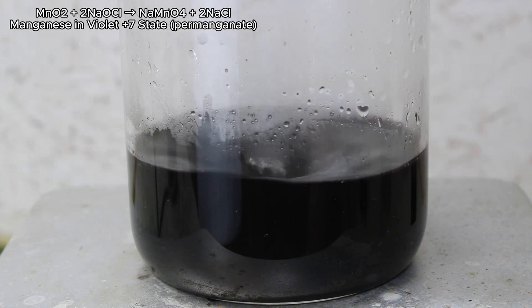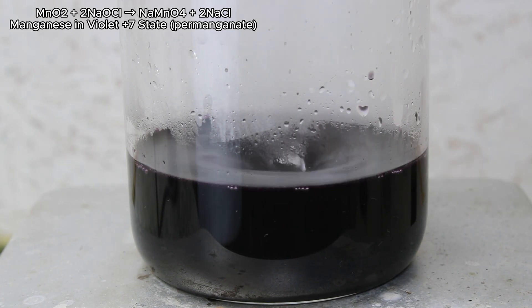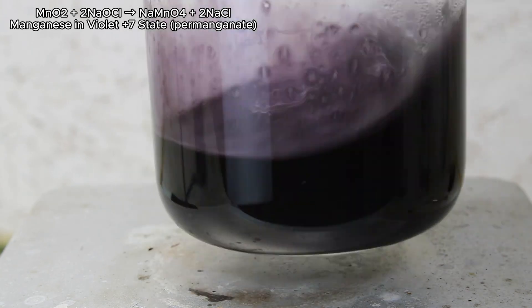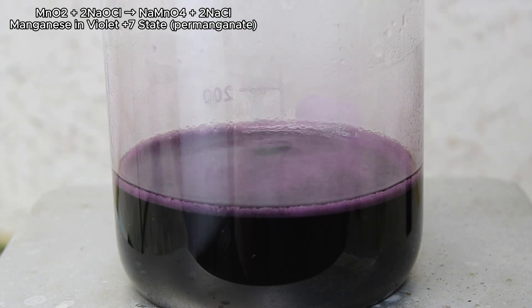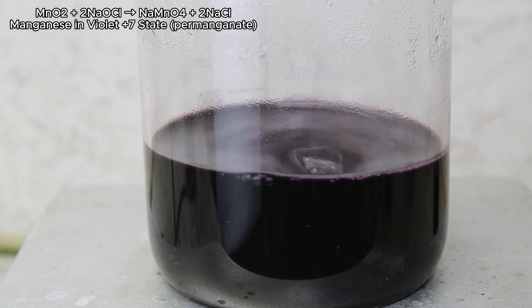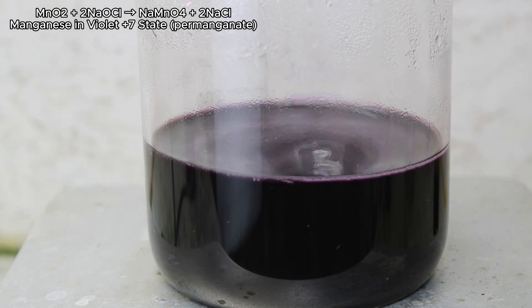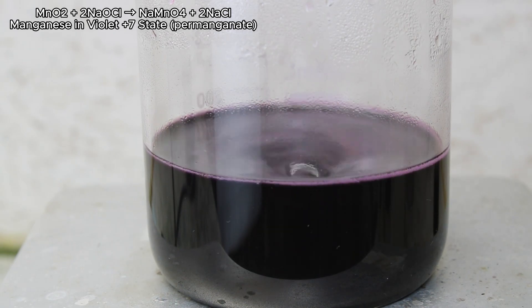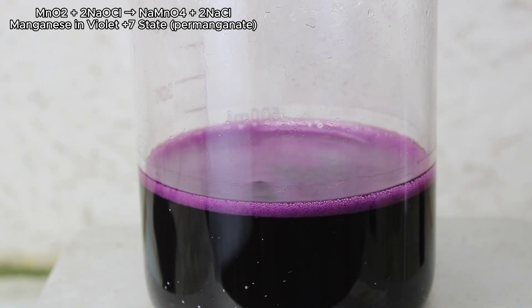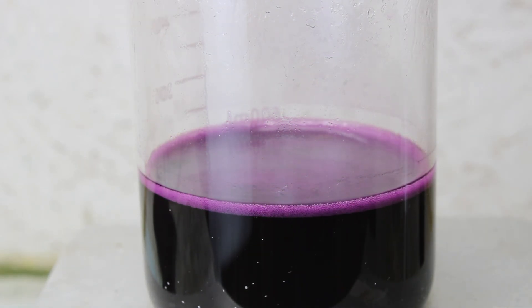This is done industrially using electrolysis, but once again I'm using hypochlorite bleach. Permanganate is an extremely strong oxidizing agent which will oxidize primary alcohols and aldehydes to carboxylic acids. It can even attack alkyl groups on benzene rings producing benzoic acid from toluene and allegedly producing phthalic anhydride from naphthalene. I've yet to try this myself, but it's on my to-do list.